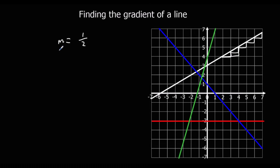m means the gradient — it isn't the best choice, we could have used g, but m is what we use for the gradient. Let's look at the blue line. For every 1 we go across, we go down 1. So the gradient of the blue line is minus 1.